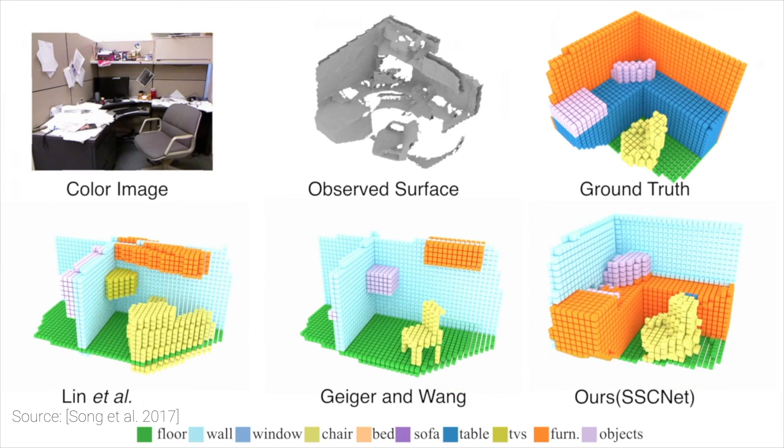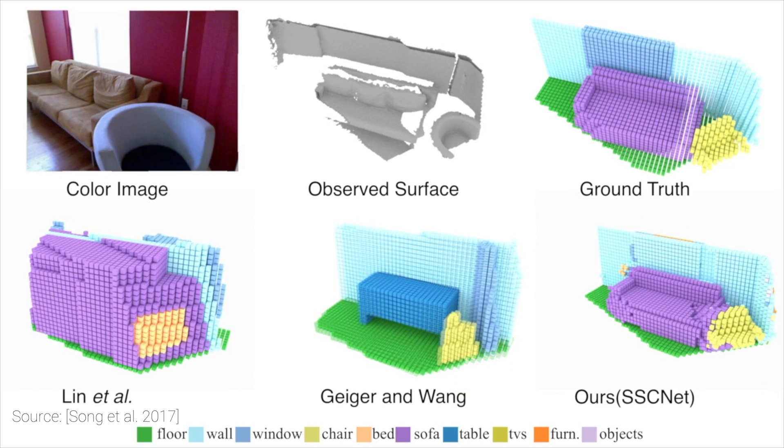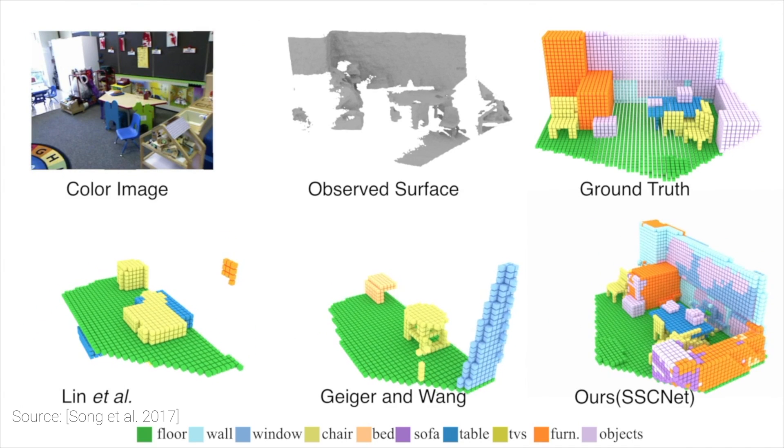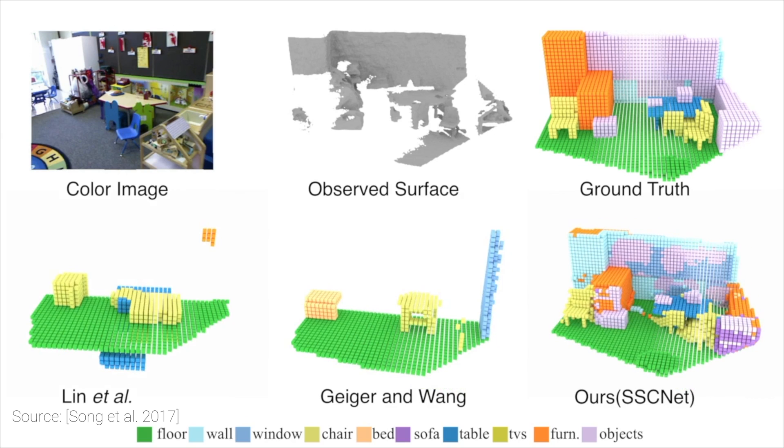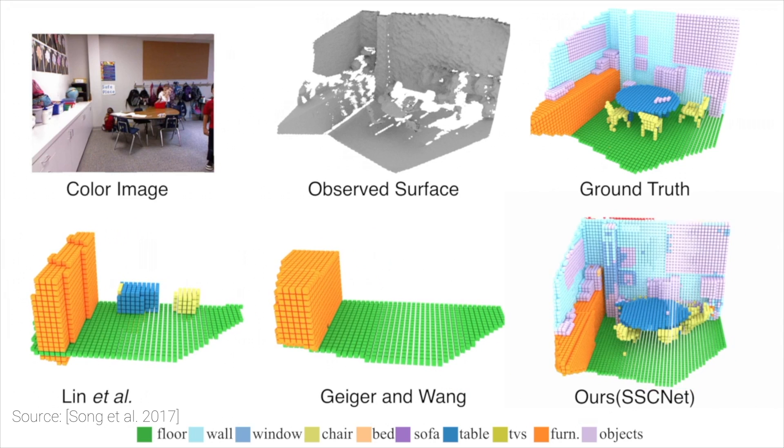Previous works were able to do scene completion and geometry classification, but the coolest part of this algorithm is that it not only does these steps way better, but it does them both at the very same time. This work uses a 3D convolutional neural network to accomplish this task.